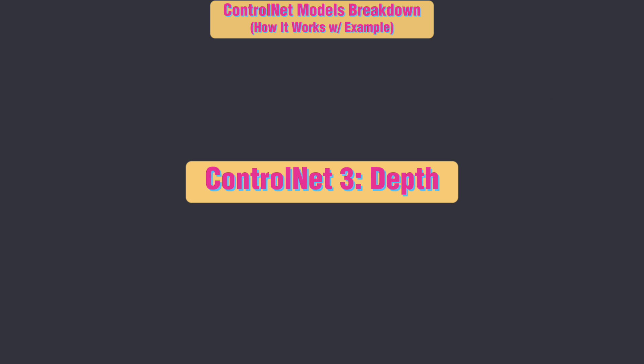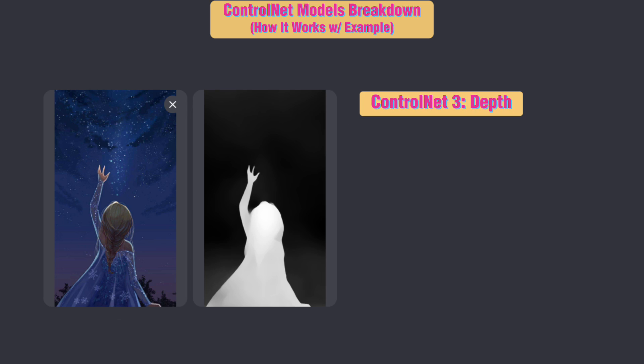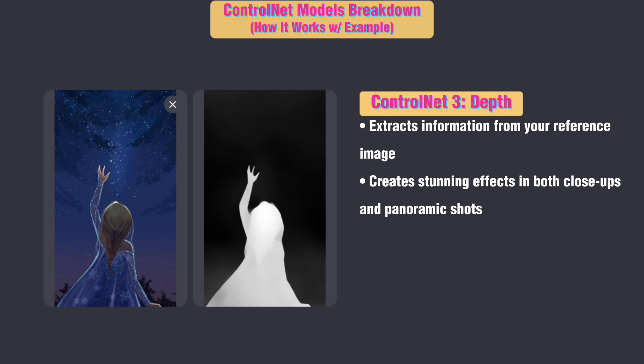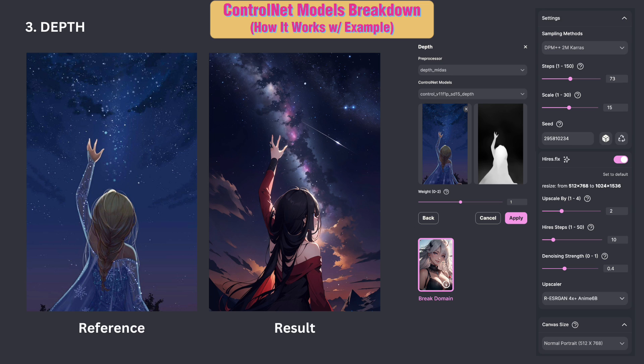ControlNet 3: Depth. It extracts depth information from your reference image, ideal for photos with varying depths of field, creating stunning effects in both close-ups and panoramic shots. You can use it to achieve the same depth of field result. Here is an example that created a similar image of a character watching the night sky.